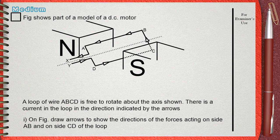Figure shows part of a model of a DC motor. A loop of wire ABCD is free to rotate about the axis shown. There is a current in the loop in the direction indicated by the arrows. On figure, draw arrows to show the directions of the forces acting on side AB and on side CD of the loop.